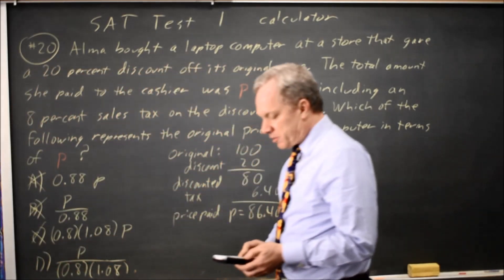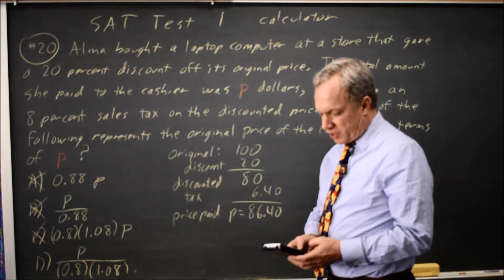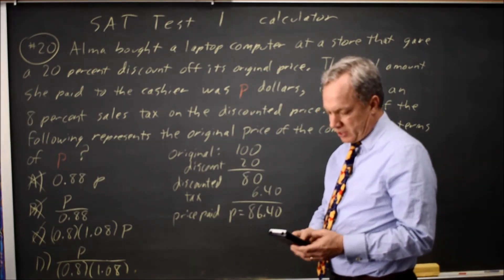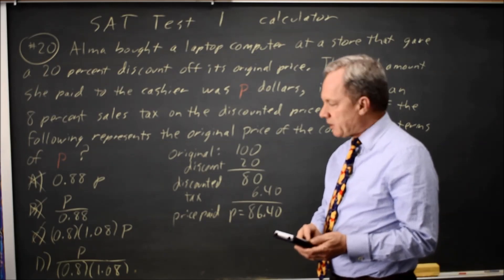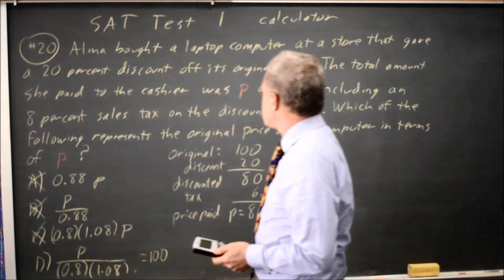On the last one, I'm going to be careful. I can take 86.40, divide by, and put my denominator in parentheses .8 times 1.08. Close those parentheses, and I get exactly 100, which is the correct original price.